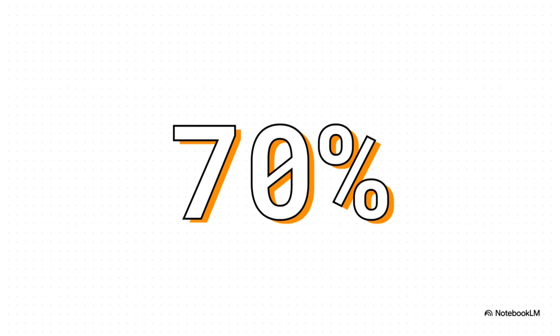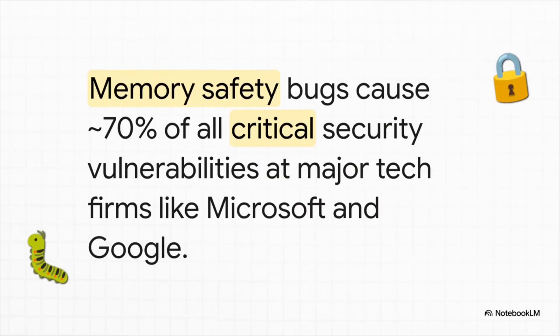I want to start with just one number: 70%. That's the percentage of critical, high-severity security bugs at giants like Microsoft and Google that are all caused by one thing — memory safety issues. And here's the crazy part: this isn't some new fancy problem. It's a foundational flaw that's been around forever, and it's exactly why languages like Rust and Go even exist.